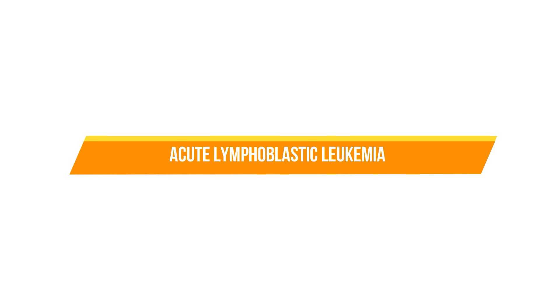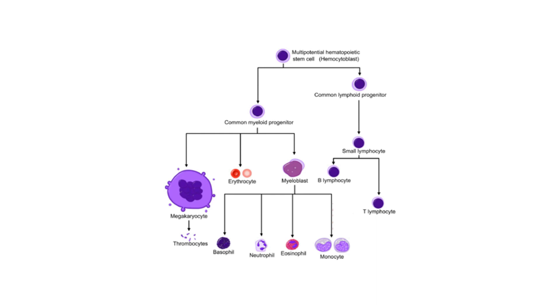Welcome back. Today we're resuming our hematology and oncology series, specifically looking at leukemias. We're going to cover acute lymphoblastic leukemia with a mnemonic I've developed. These leukemias have a lot of high-yield points and buzzwords, but it's easy to forget which goes with which after a couple of weeks. These mnemonics I developed while studying will really help you.